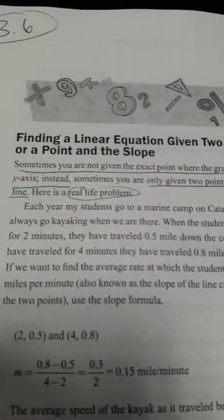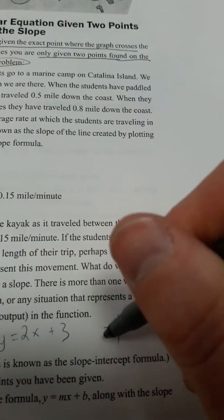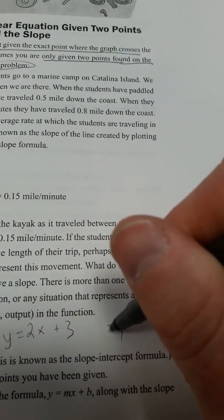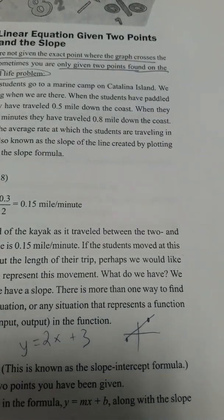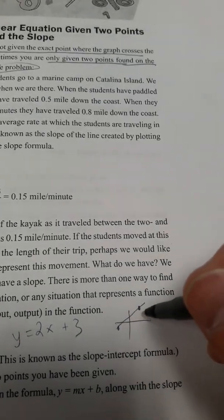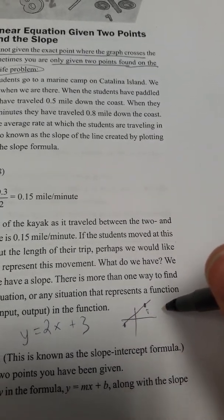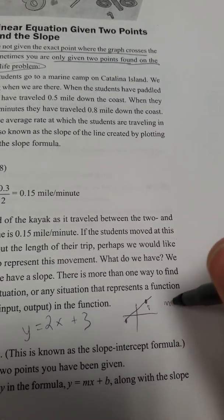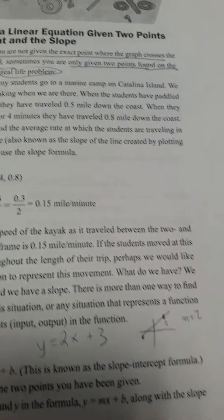We're going to find the linear equations if they give us two points on a line, like this point and that point, or if they give us just one point and the slope, like m equals 2 and here's the point.